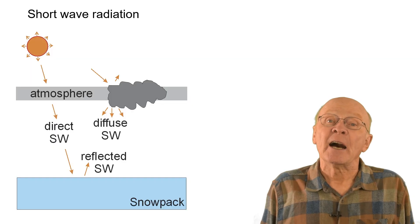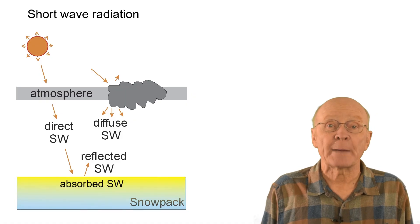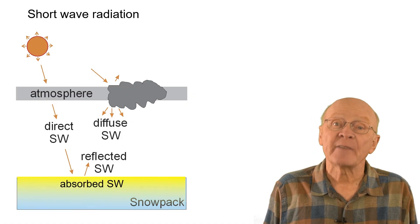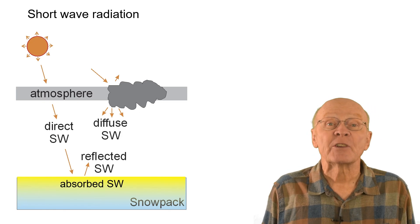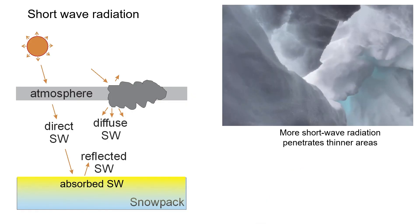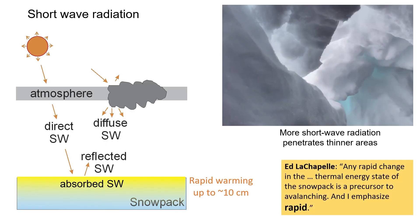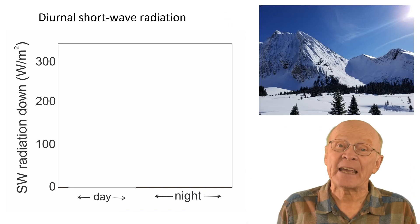Since about 90% of shortwave radiation reflects off the snow surface, that means about 10% is absorbed by and warms the upper snowpack. As a ballpark number, only about 10% of the absorbed shortwave radiation penetrates deeper than 10 centimeters, which is about 1% of the shortwave radiation that reaches the snow surface. So if you cut the roof of your snow cave too thin during the day, you will notice more light — most of which is shortwave radiation — getting through the thin areas of the snow cave roof. The shortwave radiation that is absorbed warms the upper snowpack rapidly. Ed LeChapelle has emphasized that rapid warming can lead to avalanches.